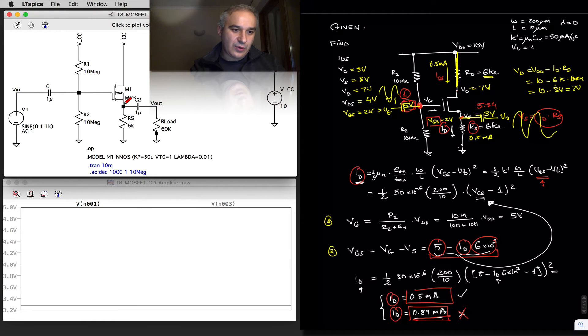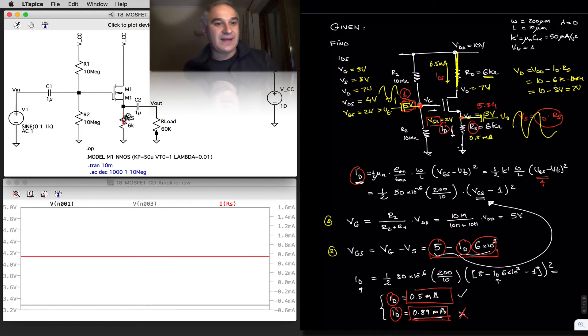We have already done the analysis before to see that the voltage at the source was going to be 3 volts, and 3 volts over 6k gives us the 0.5 milliamps for the bias.